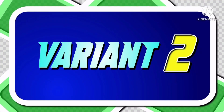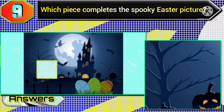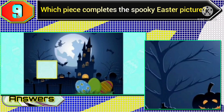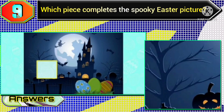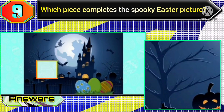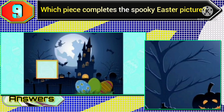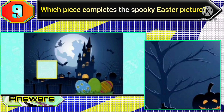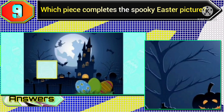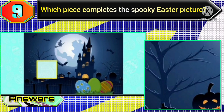Next, in variant two of this question, if you get the blank box at this position or on the tree, then here you need to choose this type of option.